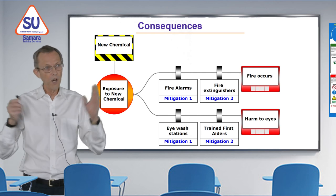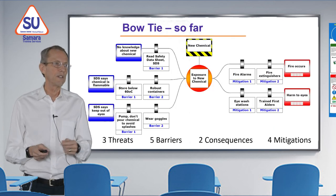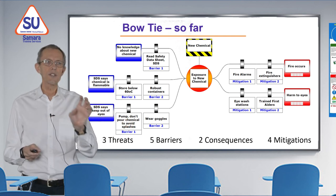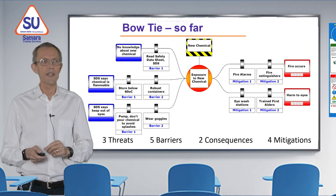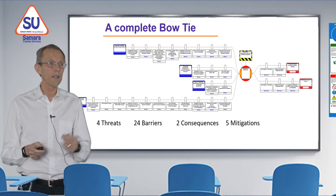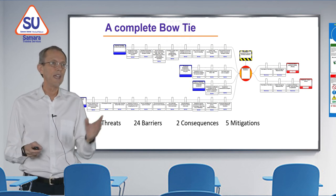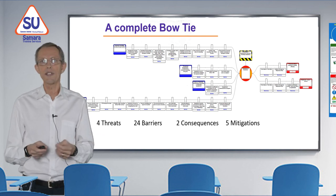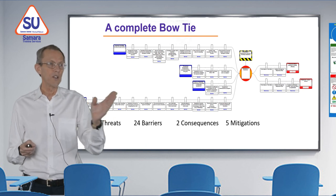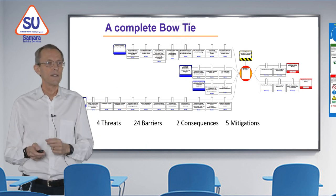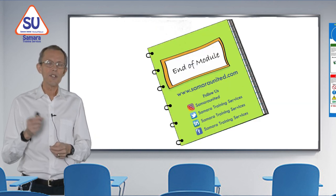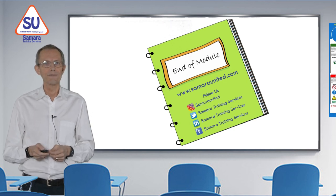Putting the whole bowtie together: three threats with five barriers, and two consequences reduced by four mitigations. This is an example of a completed bowtie for a company we worked with — introducing a radioactive material into their business — and you can see some items have many barriers. You can follow us on Instagram, Twitter, LinkedIn, and Facebook. Thank you.